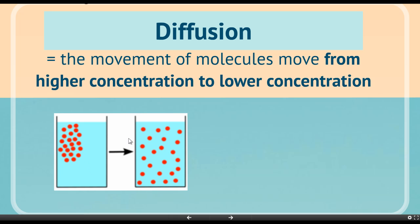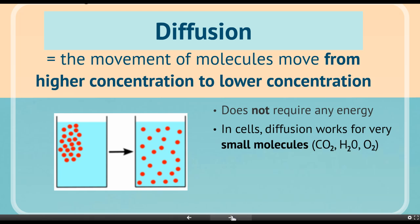Nature wants to spread out, and so those sugar molecules are going to spread out. This does not require any energy. In cells, diffusion works really well with small molecules like carbon dioxide, water, and oxygen, because these molecules are so small that they can fit between the phospholipids — they don't need to use embedded proteins.